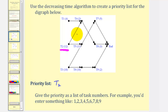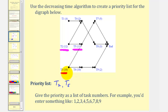Task two is followed by task five, which takes 11 hours, so task five is listed second on the priority list. Notice that both task three and task six take ten hours. Whenever the completion times are the same when applying the Decreasing Time Algorithm, we normally list the task with the lowest number first. So we'll list task three first, and then task six.